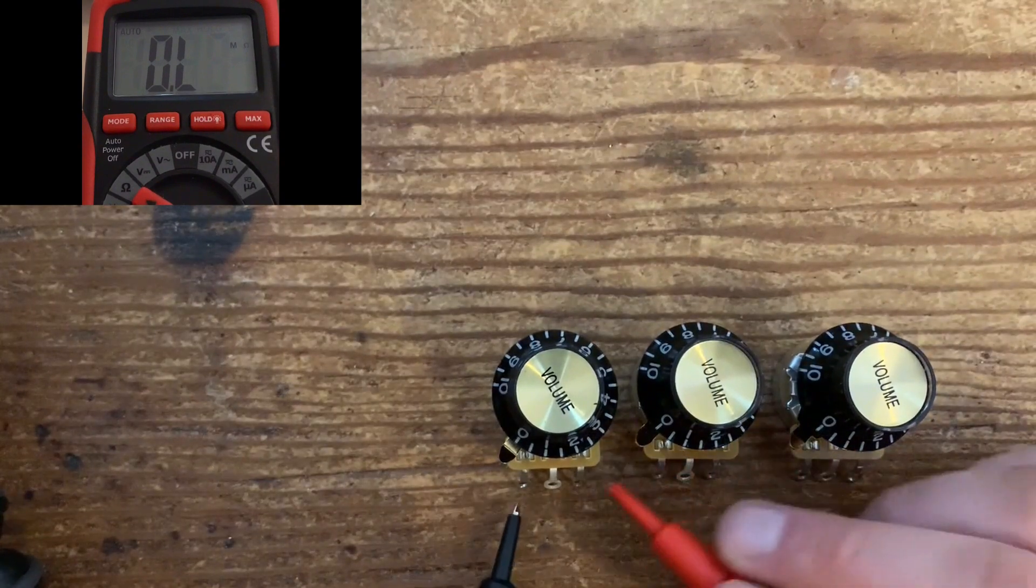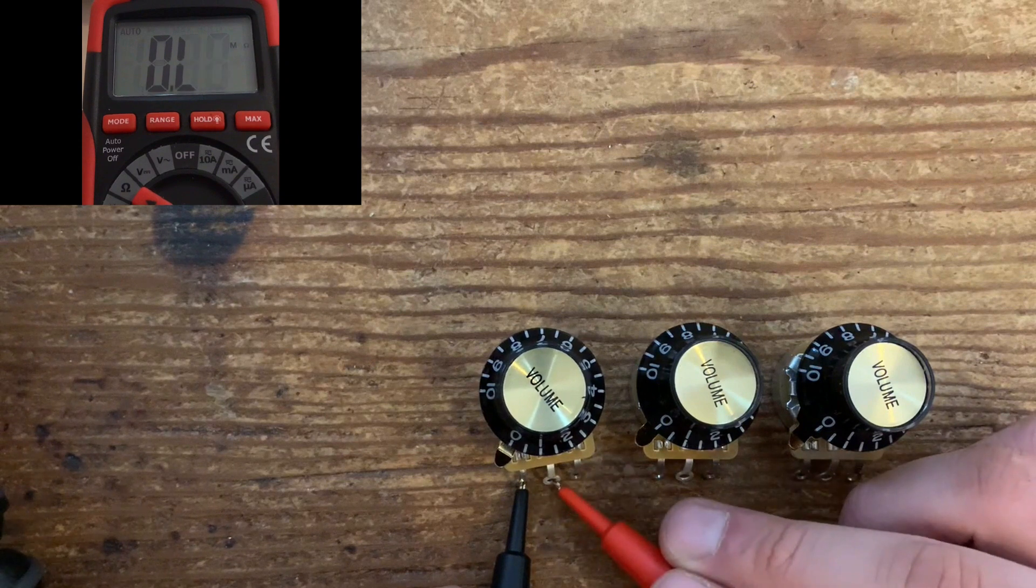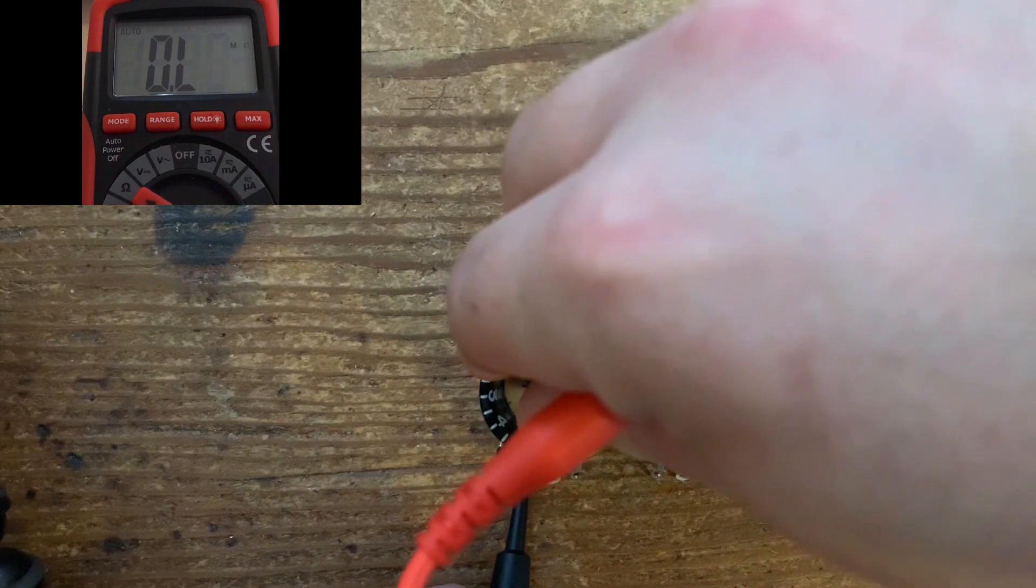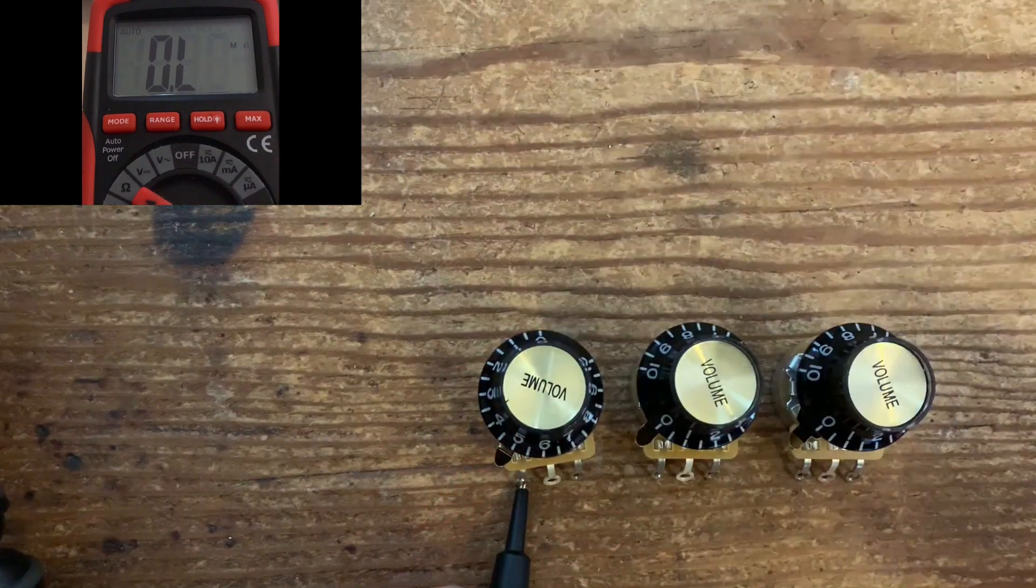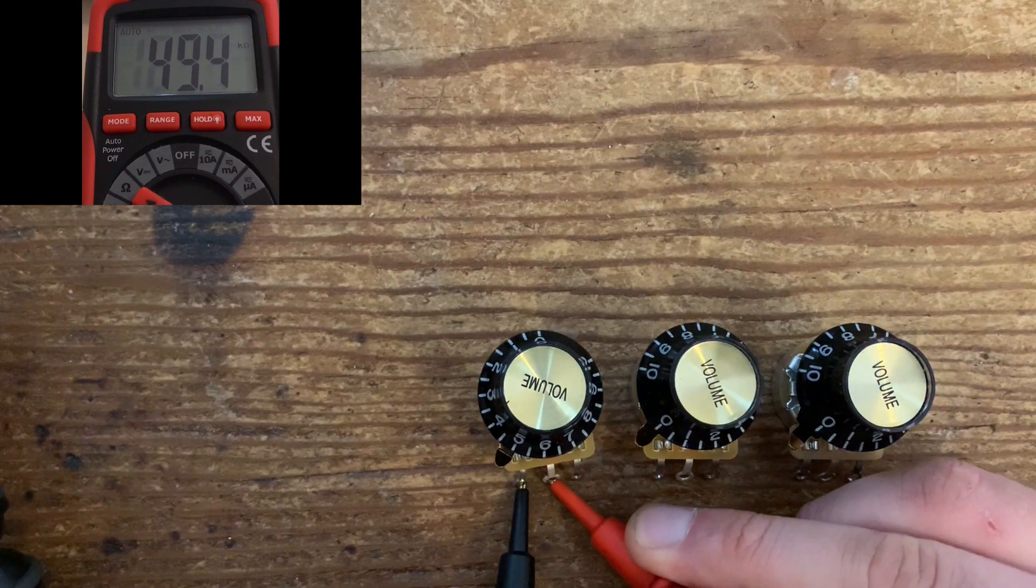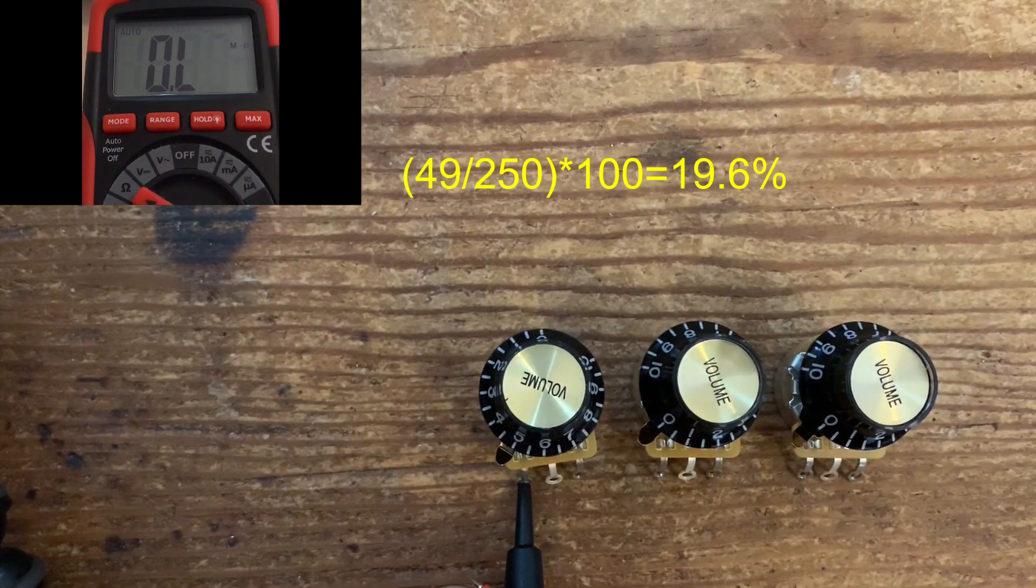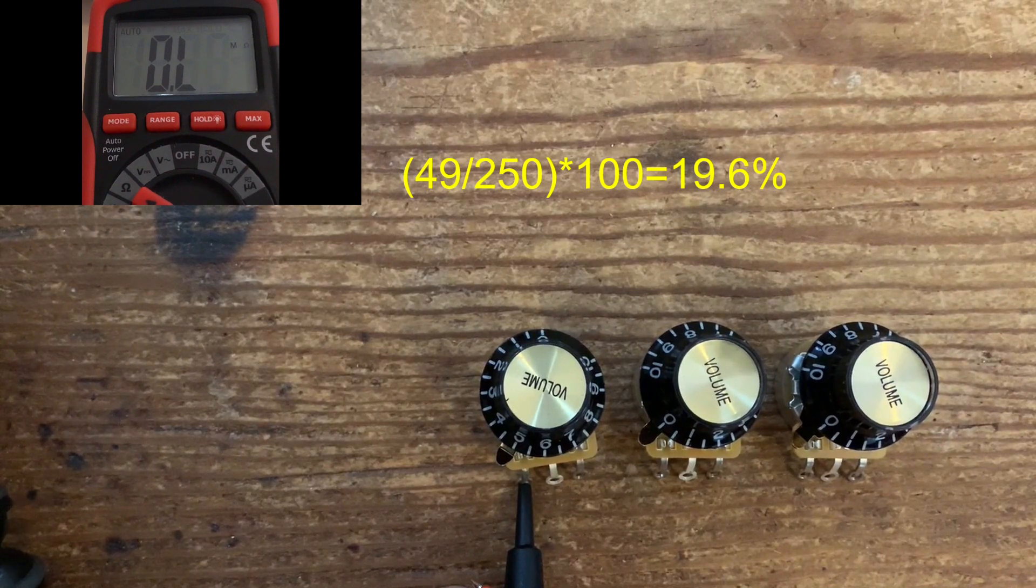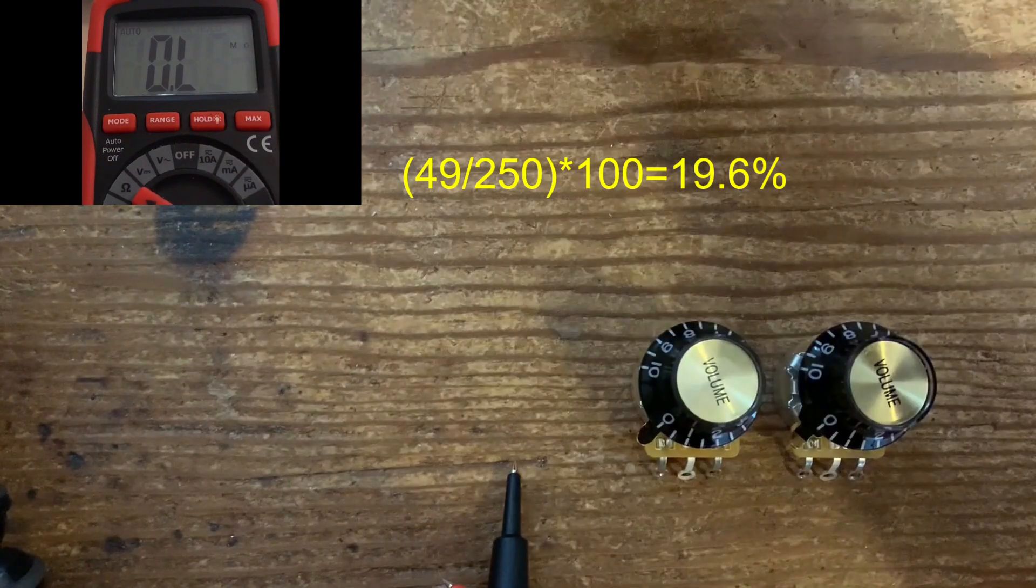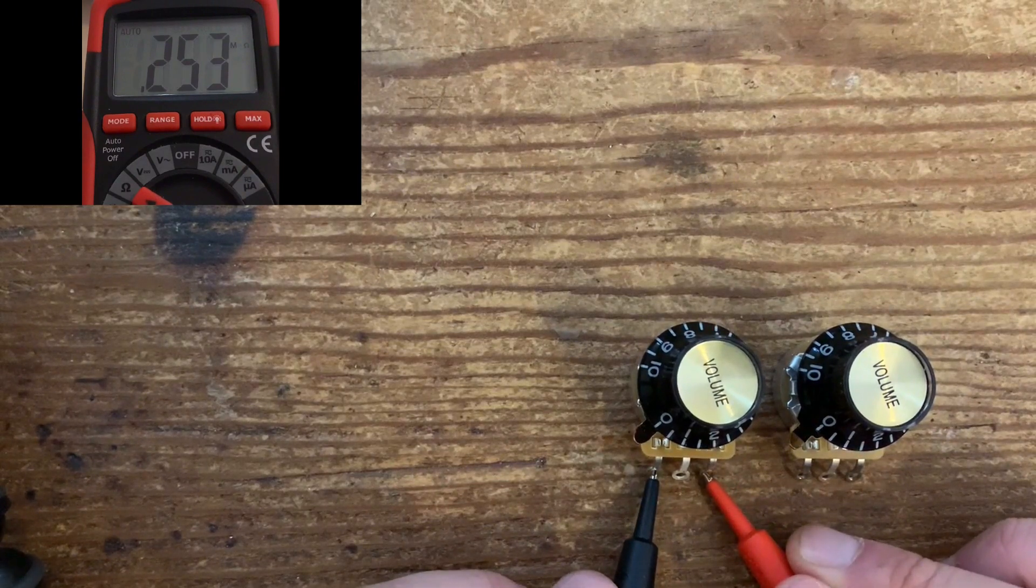The next one, this one is coming in at bang on 250. If we turn that dial to 50%, or 5, just line up with your control knob pointer if you're using one, and take the reading again from the middle. That's coming in at 49.4, so we'll round that down. 49 divided by 250 equals 19.6%, so times that by 100, 19.6%. It's safe to assume that that's a 20% audio taper curve.